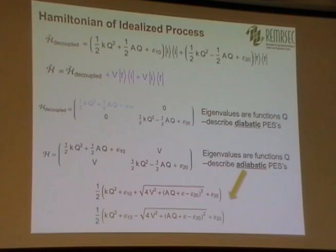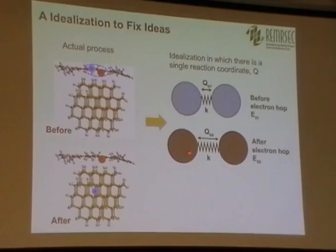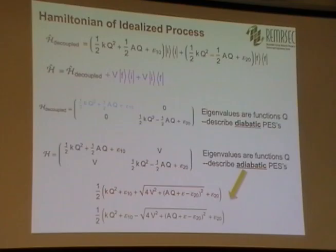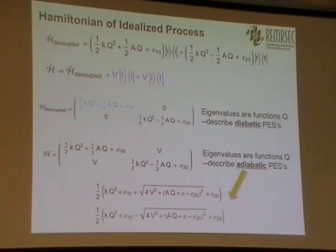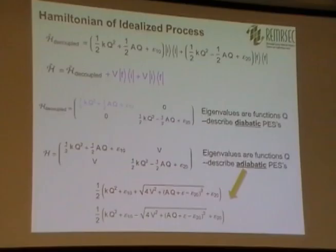Now comes some math. I'm going to talk about the Hamiltonian of the decoupled system first. I have these two configurations: the Hamiltonian associated with the first configuration initial, and the Hamiltonian associated with the second configuration final. This is saying I have a quadratic surface centered at E-naught-1 and another quadratic surface centered at E-naught-2. This is the decoupled Hamiltonian with a single reaction coordinate — no phonons. Now I add some vibronic coupling: an electronic coupling between the initial and final states, giving my new Hamiltonian.